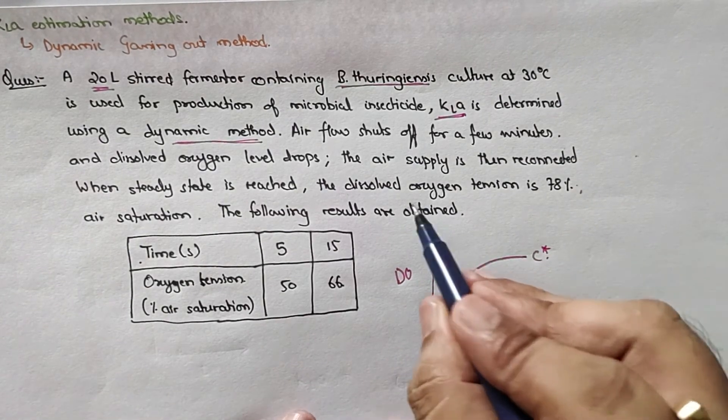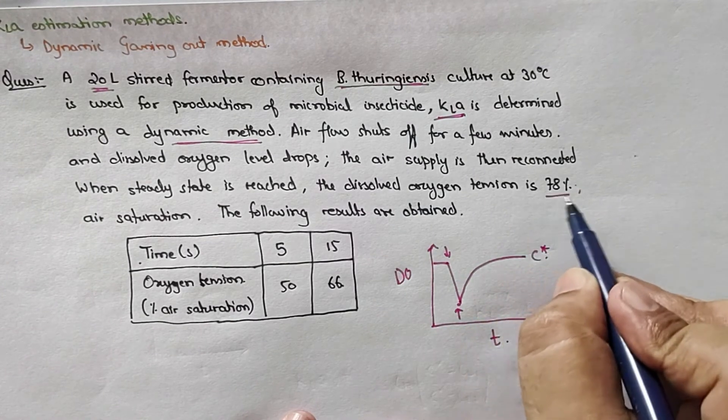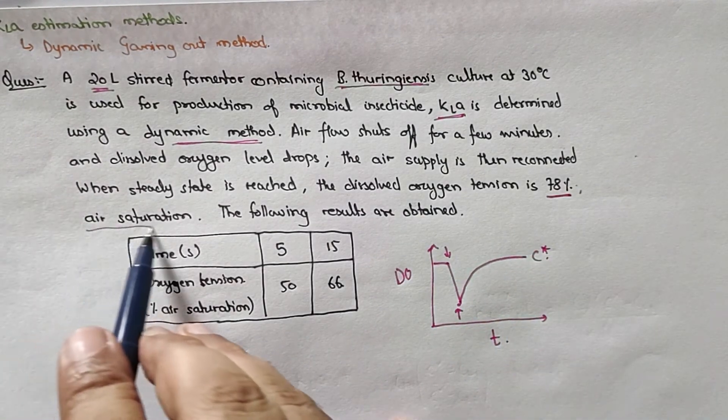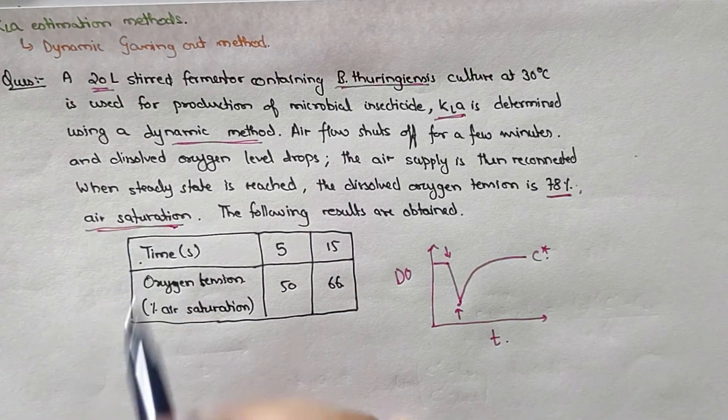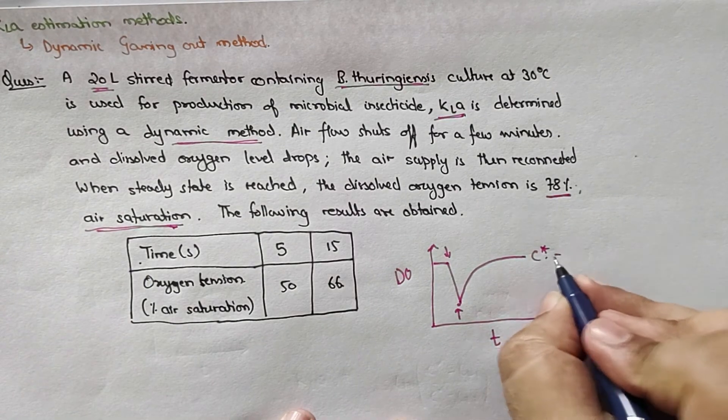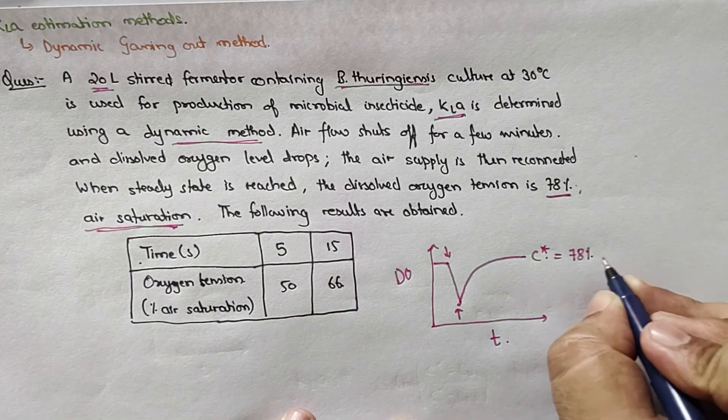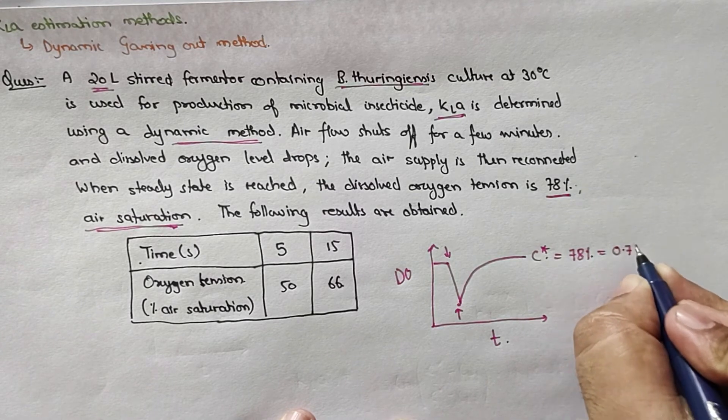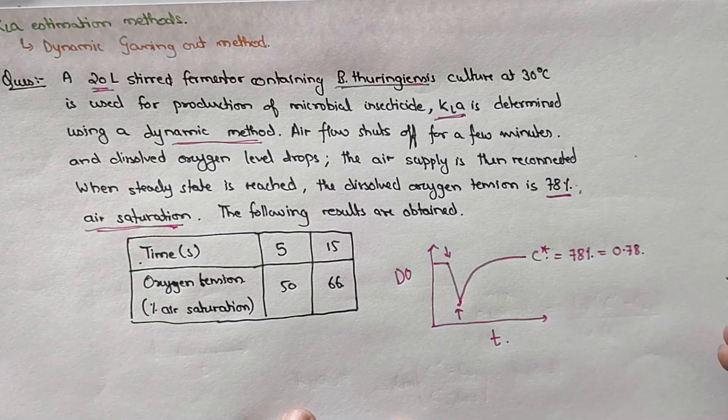What they have given you is the dissolved oxygen tension is 78 percent air saturation. So they have given you the saturation point. So this is given as 78 percent or you can write it as 0.78.